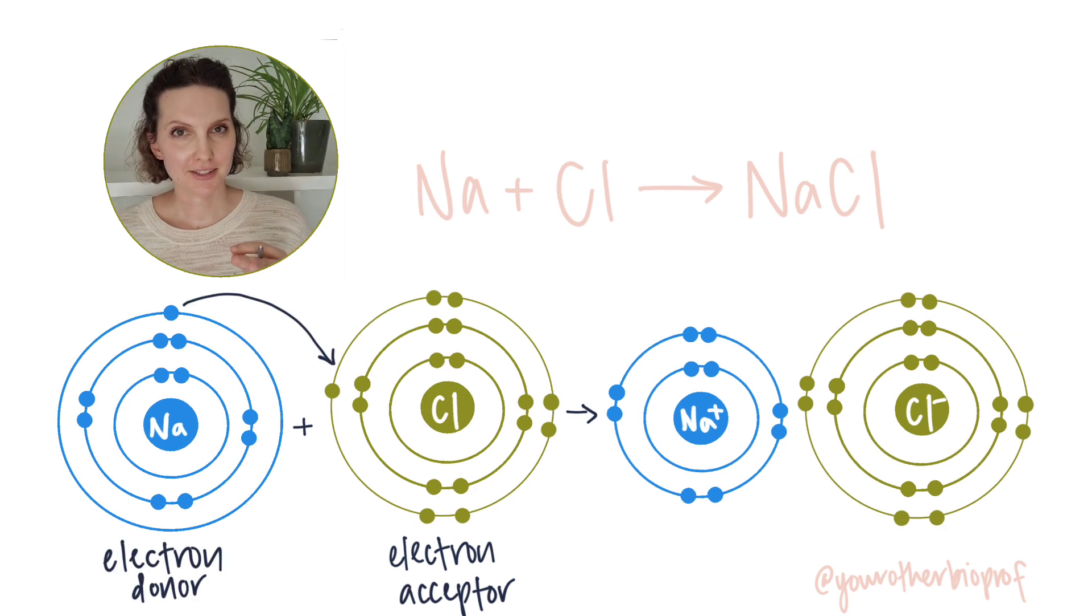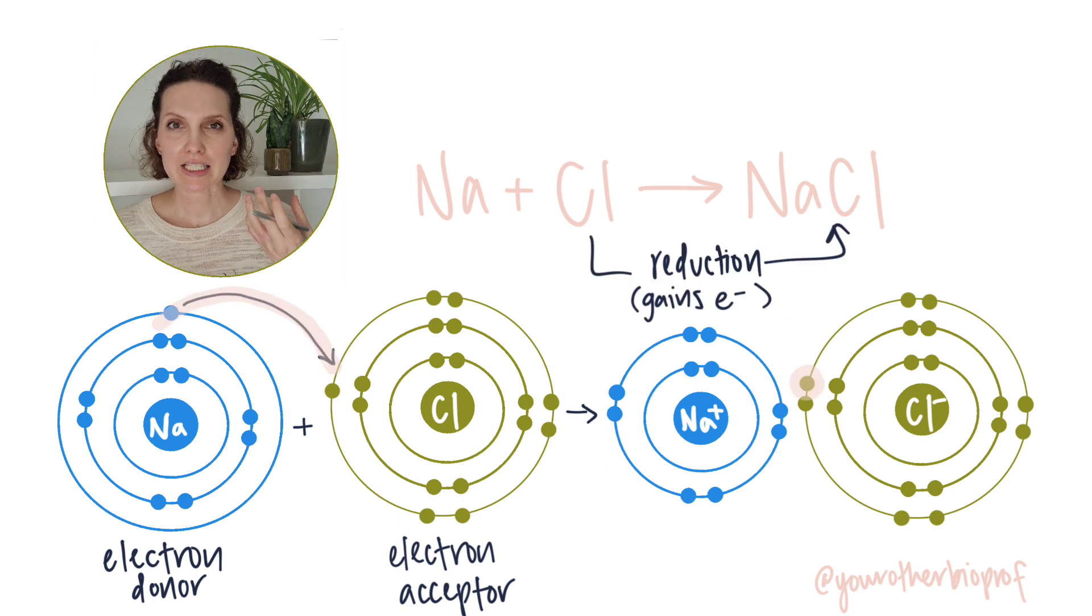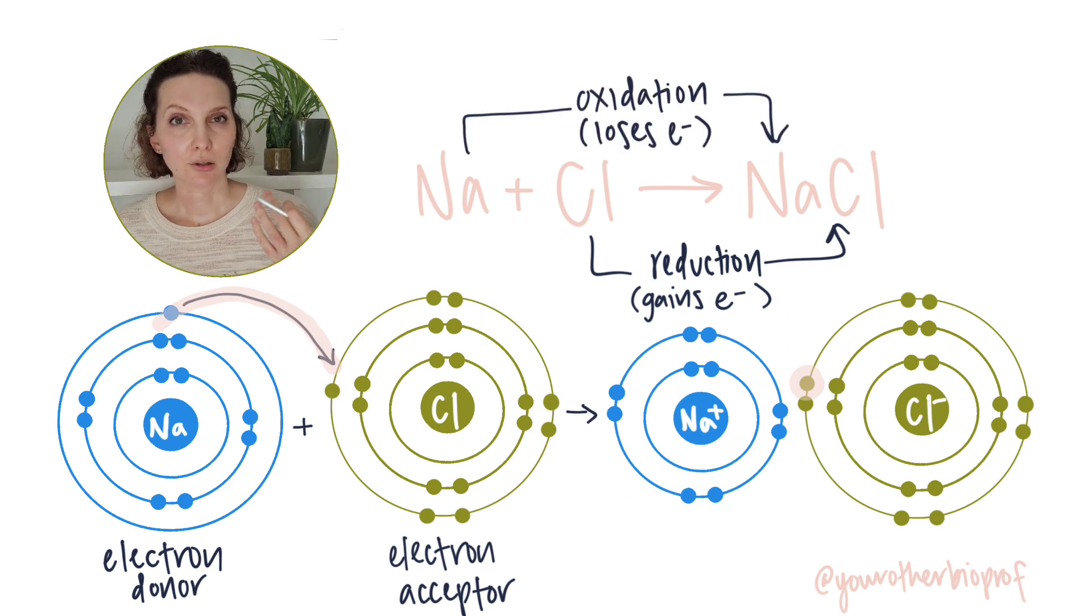Alright, so who's getting reduced in this example? It's chlorine, right? The electron acceptor. It's taking an electron. It's accepting an electron. That's reduction. So who's getting oxidized? Losing an electron here? The sodium.